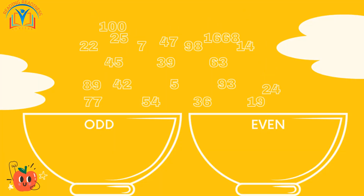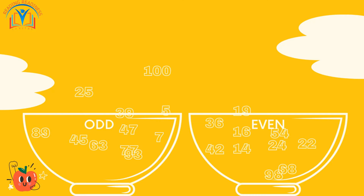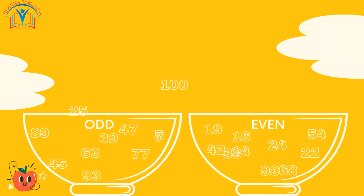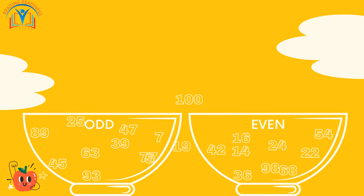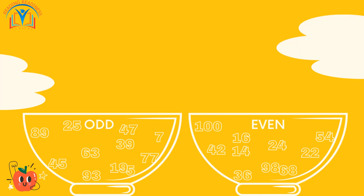You can tell if a number is even or odd by looking at its ones place, which is the digit on the far right. If the ones place is zero, two, four, six, or eight, then the number is even.